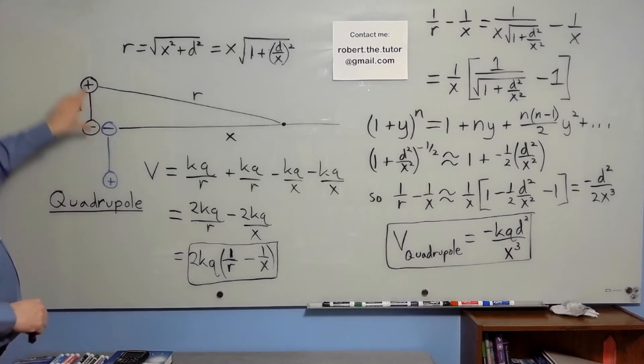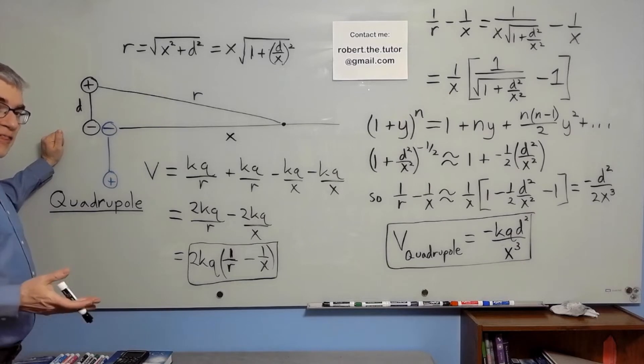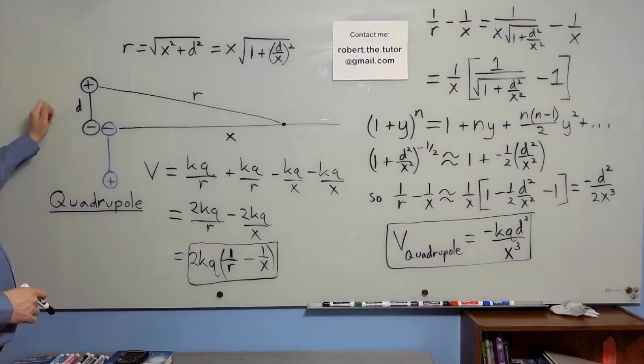If we put them exactly on top of each other, they would perfectly cancel and we'd have nothing. But arranged like this, it turns out that this doesn't have a dipole moment or a net charge, but it has what we call a quadrupole moment.